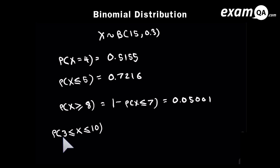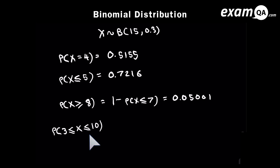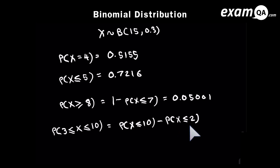The last one is the trickiest — it says between 3 and 10, including both. If you simply wrote P(X ≤ 10), that goes from 10 all the way to 0, but you only want 10 down to 3. So you'd be incorrectly including 2, 1, and 0. Simply subtract P(X ≤ 2), and that gives you exactly what the question asked for. You should get 0.8725.